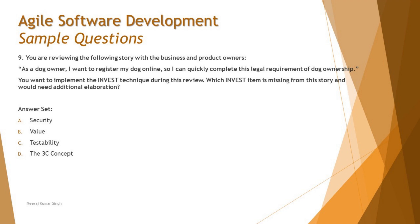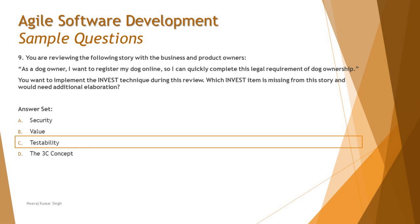So the right answer for this question is C: Testability is the INVEST parameter that is missing in this particular user story. You should develop the skill of reading and reviewing a user story yourself before looking at the options — otherwise it becomes very difficult to decide between choices. These questions are quite tricky, so always analyze the story independently first.